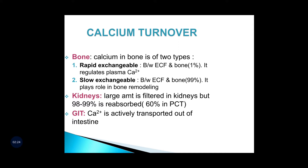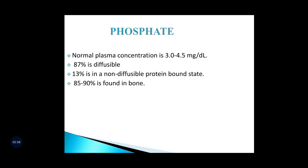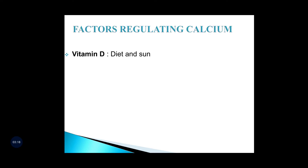Calcium in bone is of two types. The first is rapid exchangeable, which is exchanged between the extracellular fluid and the bones and regulates plasma calcium levels. The slow exchangeable is 99% between the ECF and the bone and plays a role in bone remodeling. The kidneys filter large amounts of calcium, but 98% is reabsorbed. In the GIT, calcium is actively transported in the intestine and absorbed into the blood. The normal concentration of phosphate is 3 to 4.5 milligrams per deciliter, and about 85–87% of the usable fraction is found, with 20% found in the bones.